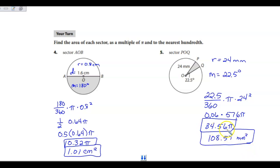When you take 34.56 times pi, you get 108.57, and it's millimeters squared.